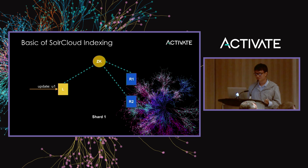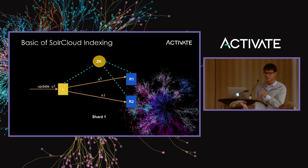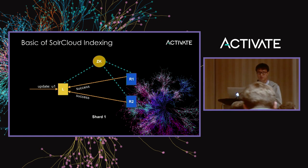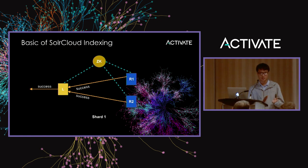When a client tries to send an update to the leader, the leader will apply the update locally and forward the update in parallel to other replicas. Other replicas will handle the update locally and return success to the leader. At that point the leader will know the update has been handled successfully by other replicas, so it will return success to the client.